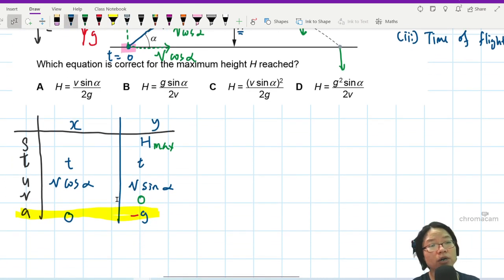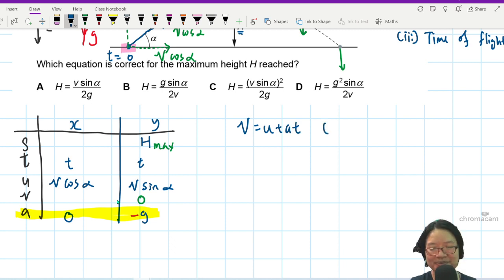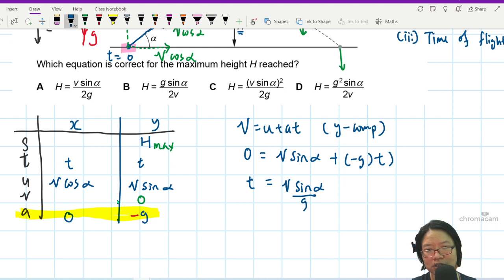V_Y is 0. So I can now use my equation. I can use any equation that I want. Let's say I use the most straightforward one. V is equal to U plus AT. This one for the Y component. 0 is equal to V sin alpha plus negative GT. So I can substitute the T or find a way to substitute T. So from here, T is equal to V sin alpha over G.